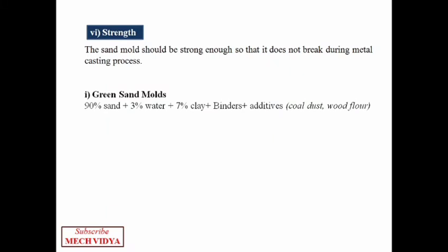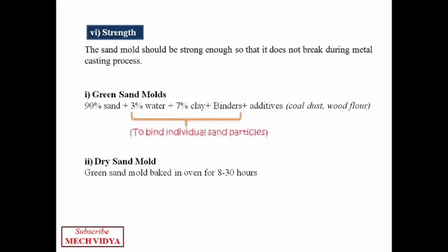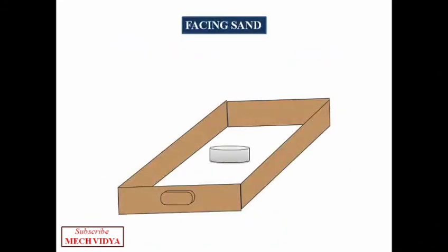If we dry this green sand mold in an oven for eight to twelve hours at 150 to 300 degrees centigrade, we get dry sand mold. They have higher strength and are used for medium to large size castings. One point to be noted here is that while making the mold, first before pouring the actual molding sand,